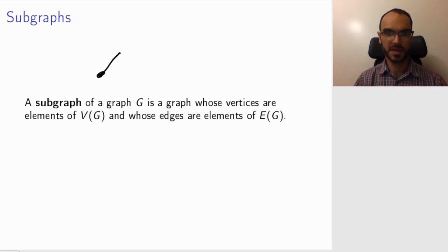So look, for example, at this graph. So in general, the definition is the following. A subgraph of a graph is a graph whose vertices sit in this graph G and the edges come from the graph G.